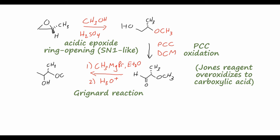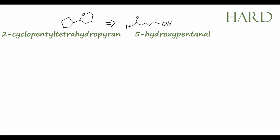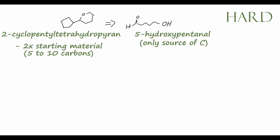Let's do this more difficult synthesis: producing 2-cyclopentyl tetrahydropyrane from 5-hydroxypentanal. One caveat is that this hydroxypentanal should be our only source of carbon in the synthesis. Take a few minutes, pause the video, try to solve the problem on your own, and then come back when you think you've found a solution. As always, let's count our carbons. We have 5 carbons in the starting material aldehyde, and 10 carbons in the product, which means we should be using our starting material twice throughout the synthesis.